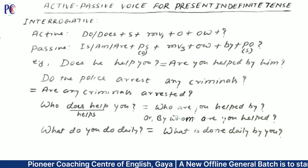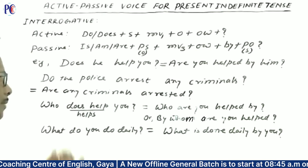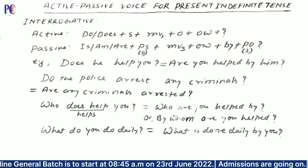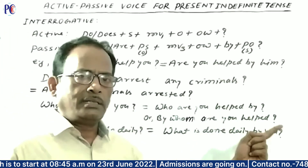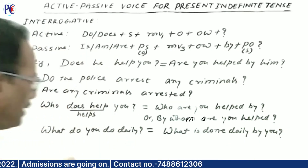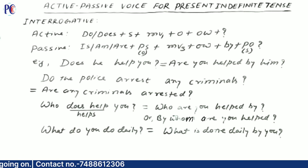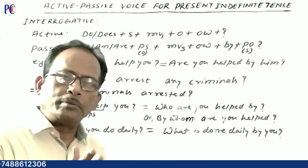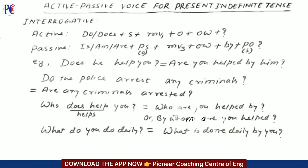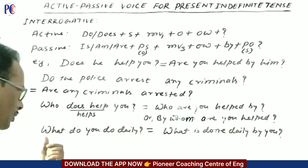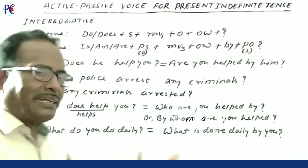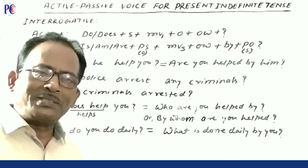Next example: 'Who helps you?' or 'Who does help you?' The passive forms are: 'Who are you helped by?' or more formally, 'By whom are you helped?' Next example: 'What do you do daily?' Passive: 'What is done daily by you?'